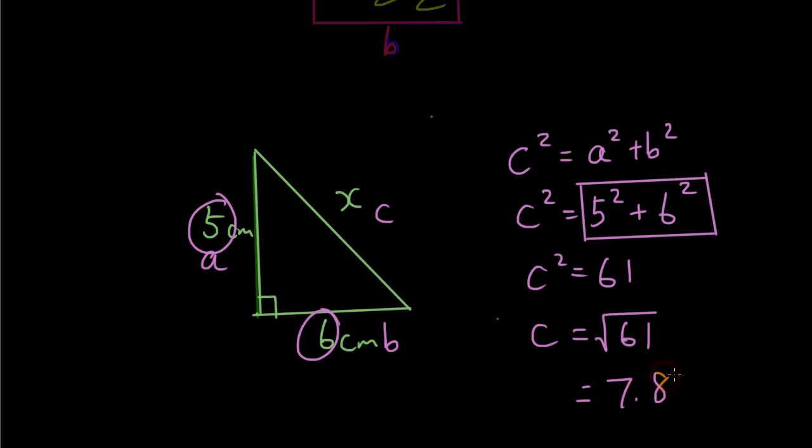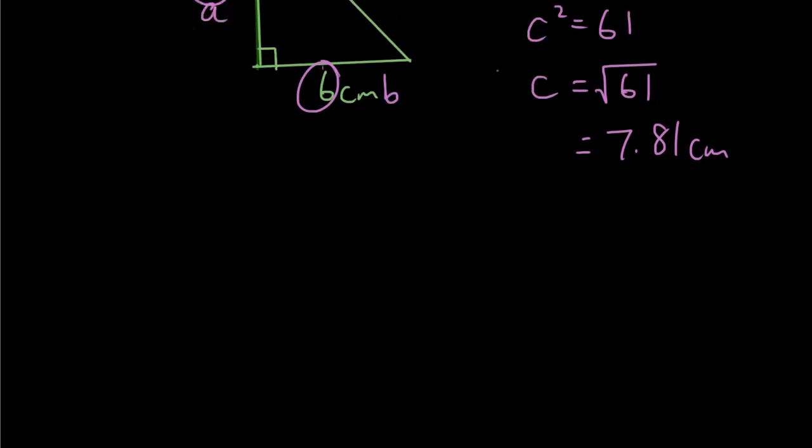Seven point eight one centimeters. Which makes sense because c is the longest side. So seven point eight one is longer than five and six. So now let's try it with a different triangle.